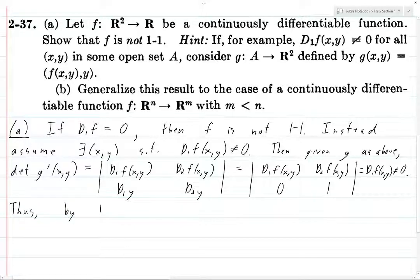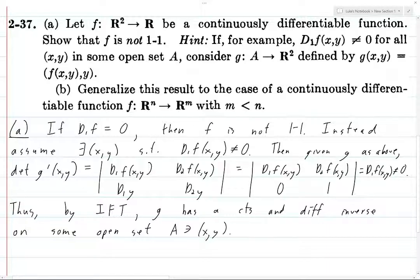Thus, by the inverse function theorem, which is theorem 2-11, g has a continuous and differentiable inverse on some open set A. And of course, A must contain the point (x,y). So we do end up using an open set A like they say in the problem statement. I just don't think that it necessarily needs to be the case that d₁f(x,y) is non-zero on all of A. This might end up being a consequence because of how invertible functions are, but I don't think it's absolutely necessary. It's not necessary for the proof.